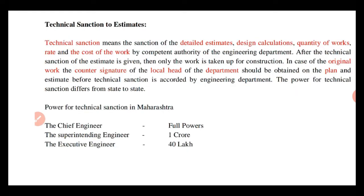Next, technical sanction. Technical sanction means the sanction of the detail estimate, design, calculation, quantity of rates, and the cost of the work by the competent authority of the engineering department. After the technical sanction of the estimate is given, only then the work is taken up for construction.